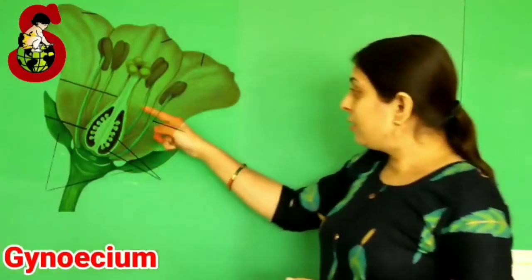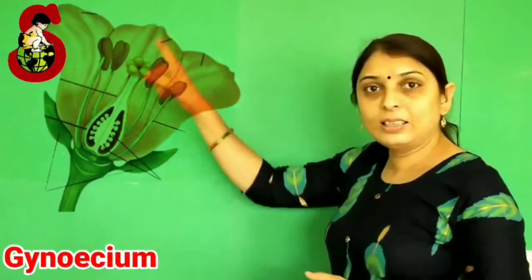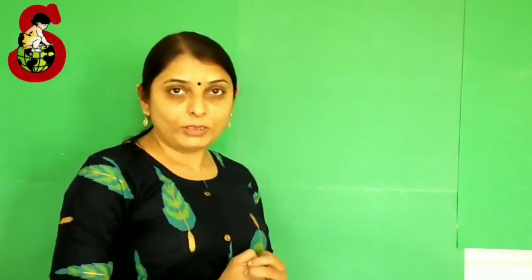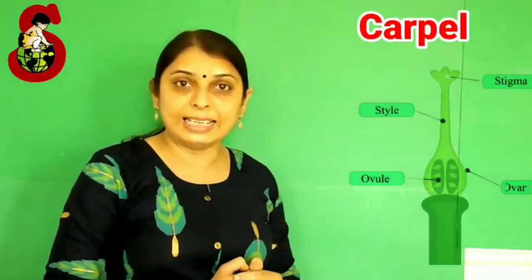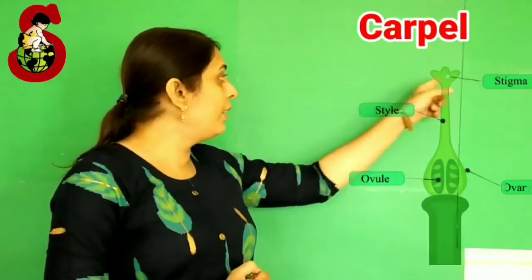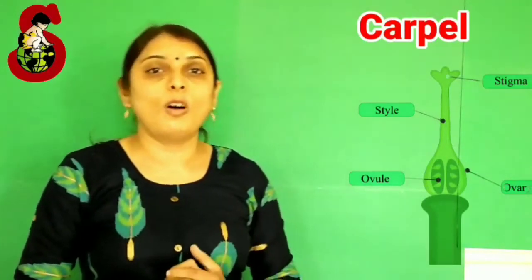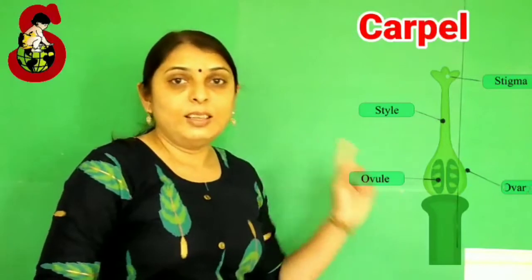The second reproductive whorl is gynoecium. The sticky portion, the stalk, and the swollen base — this whole structure is known as gynoecium. It is the female part of a plant and it consists of carpel or pistil. The unit of gynoecium is carpel or pistil. Like stamen, carpel or pistil is also divided into three distinct structures. The receptive site for pollen grains is known as stigma — it is the sticky portion. The stalk of the female part is known as style. And the swollen base is known as ovary, which consists of ovules. So carpel or pistil is made up of stigma, style, and ovary.